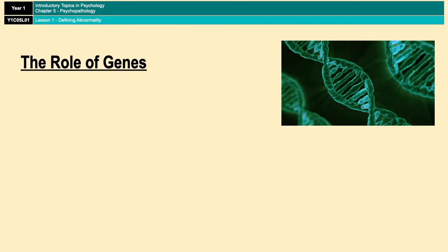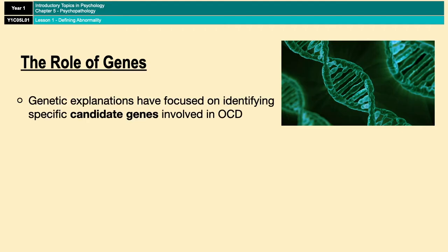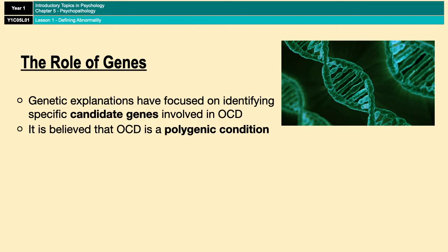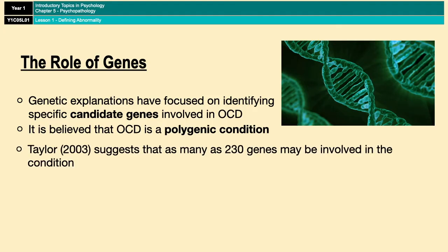Research into the role of genes in OCD has mainly focused on trying to identify specific candidate genes that are implicated in the development of OCD. That research has suggested that OCD is actually a polygenic condition, meaning there's not just one gene responsible but many genes that contribute. Research by Taylor in 2003 suggests there are as many as 230 different genes that could be involved, and that variations of these genes contribute to different types of OCD.